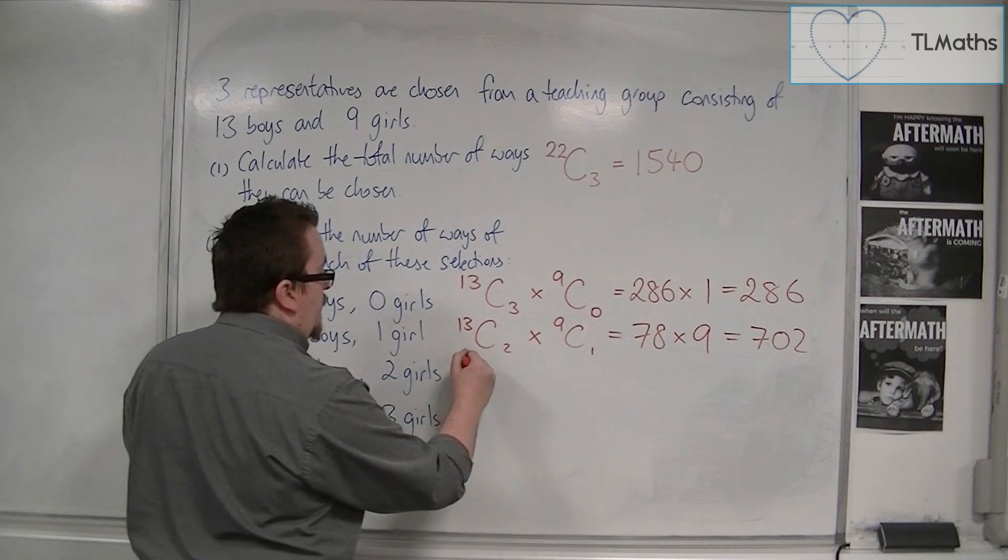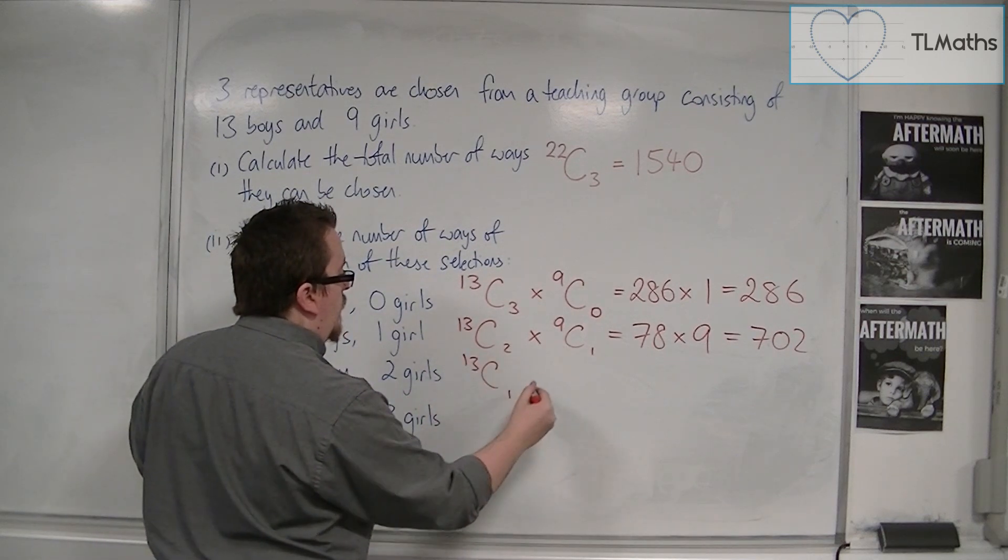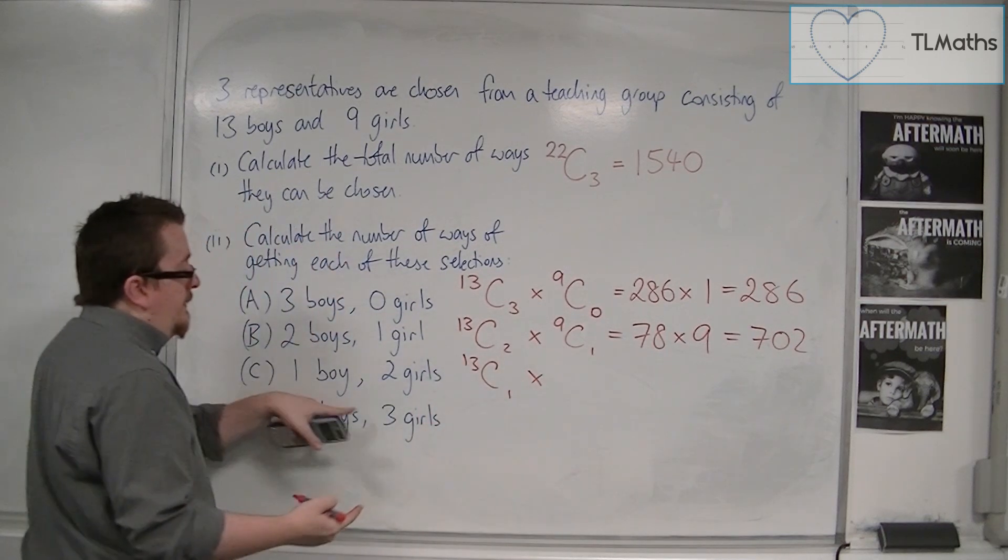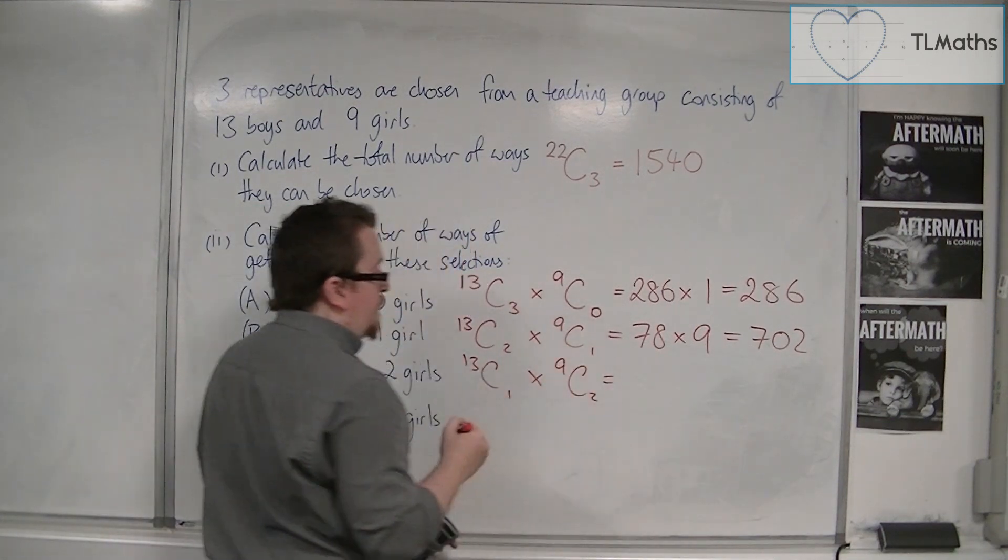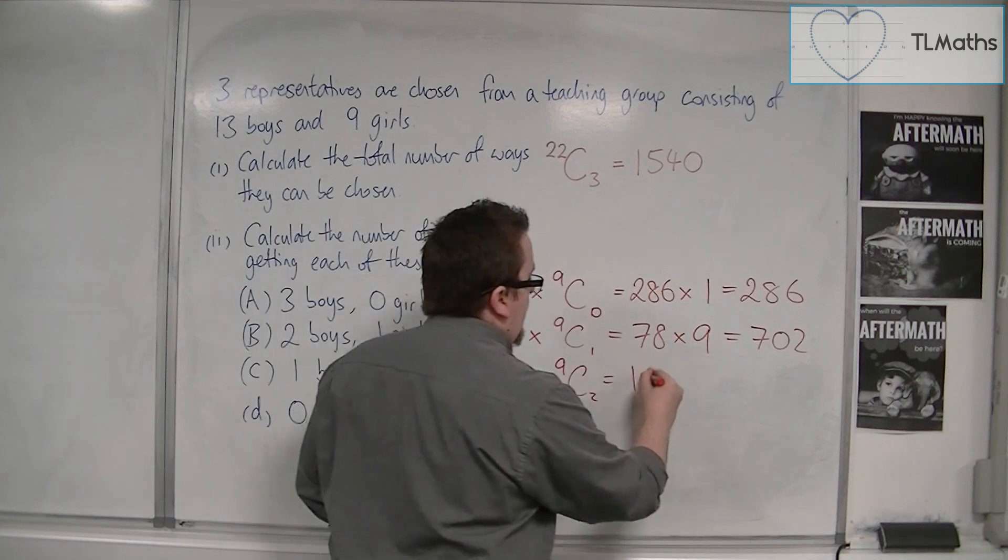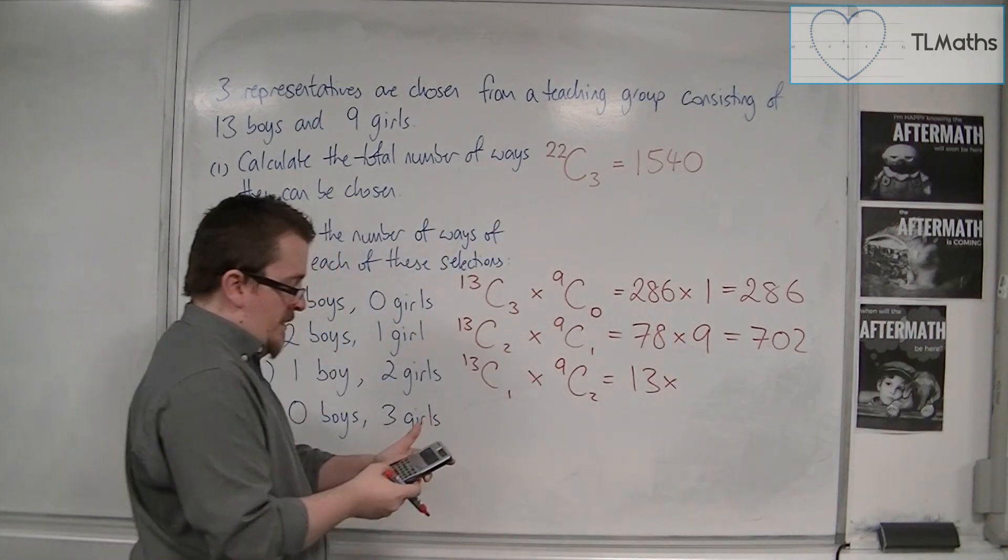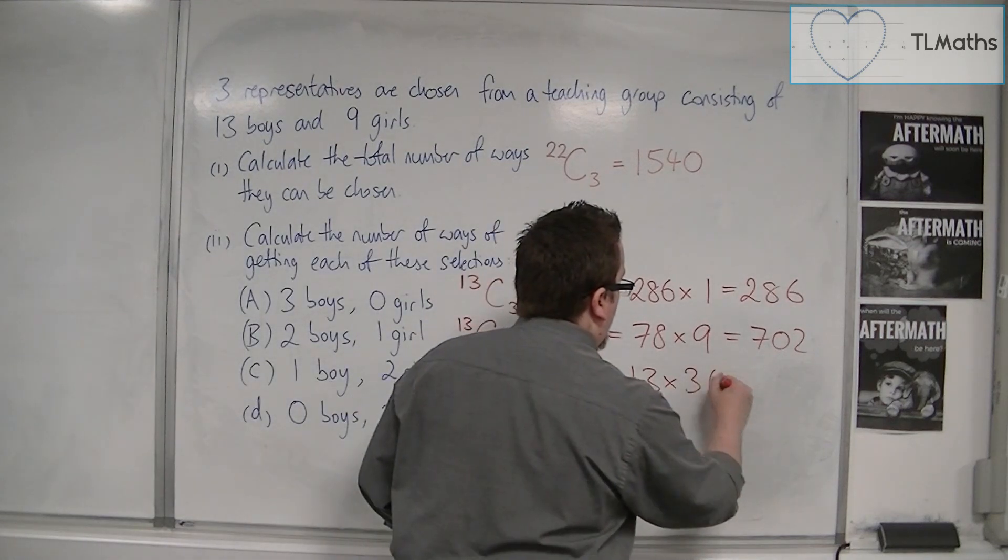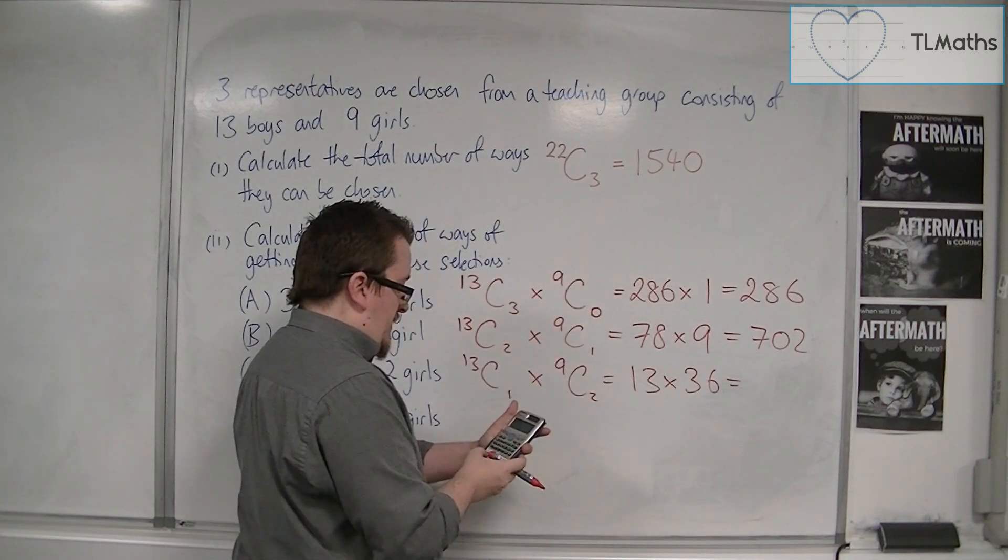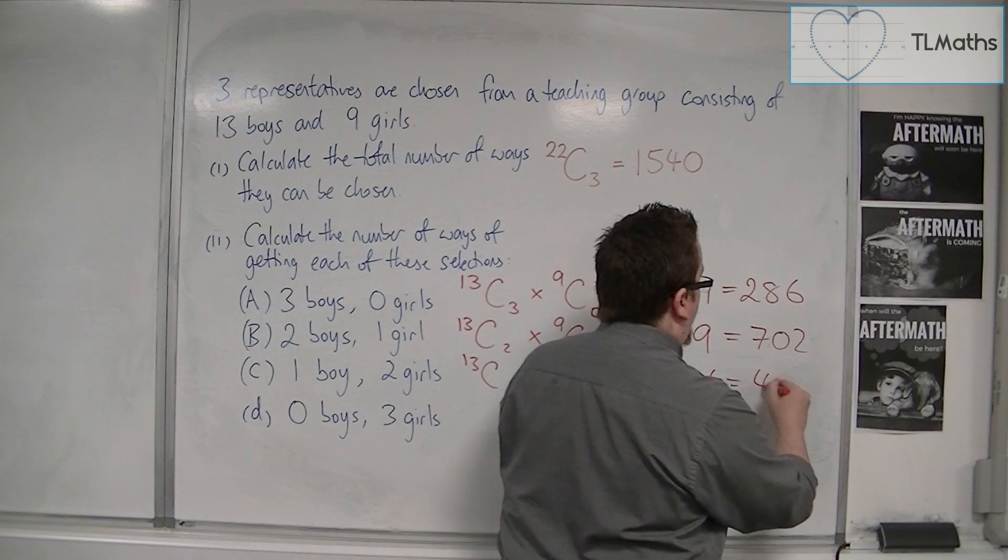Now I've got out of 13 choose 1, which I know is going to be 13, and then out of nine girls I want to choose 2. So I have 13 times 9 NCR 2 is 36. So 36 times 13 is 468.